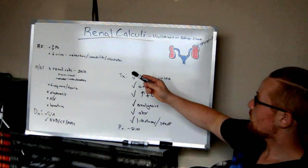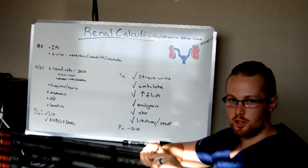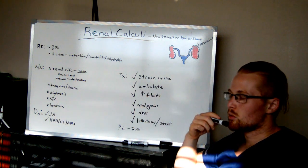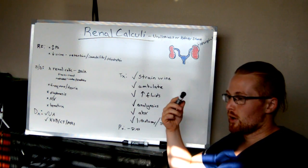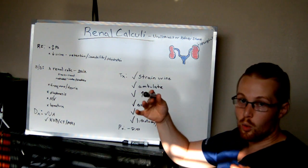So, risk factors for developing renal calculi. Abnormal pH levels in the urine that may be due to a diet or may be due to other things that are going on in the body, okay? So acidic or alkaline.